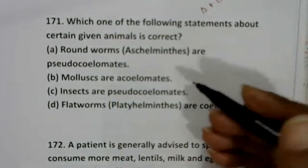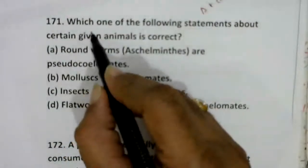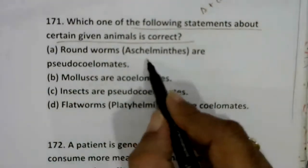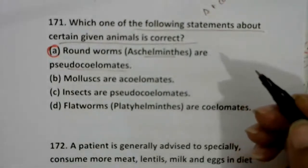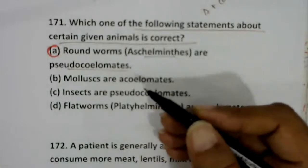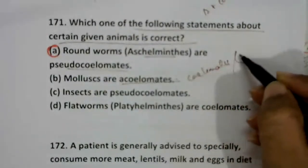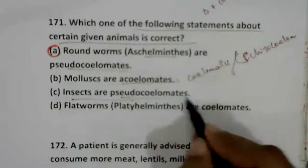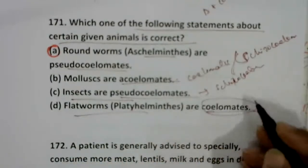Isozymes are mainly active in the intestine and act upon protein molecules. Regarding coelom in animals: roundworms (Nematoda) are pseudocoelomates — correct. Molluscs are true coelomates (schizocoelom) — not aceolomates. Insects are schizocoeloms, not pseudocoelomates. Flatworms are acoelomates, not eucoelomates. The first statement is correct.